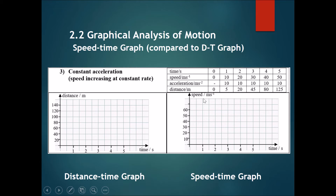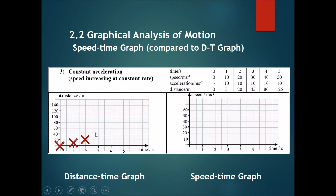Now let's talk about acceleration. Here we refer to the actions of one object. First, we're going to plot the object's distance-time graph, comparing time with distance: at time 0 the distance is 0, time 1 gives distance 5, time 2 gives 20, time 3 gives 45, time 4 gives 80, and time 5 gives 125. With these plots, you can see that with constant acceleration the distance-time graph produces an upwards-bending curve.